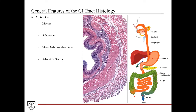Lastly, we have the adventitia or serosa, or sometimes both. Adventitia is found in regions of the GI tract that are more fixed to the rest of the body, whereas the serosa covers the more movable portions of the GI tract, such as the stomach, the small intestine, and portions of the large intestine.